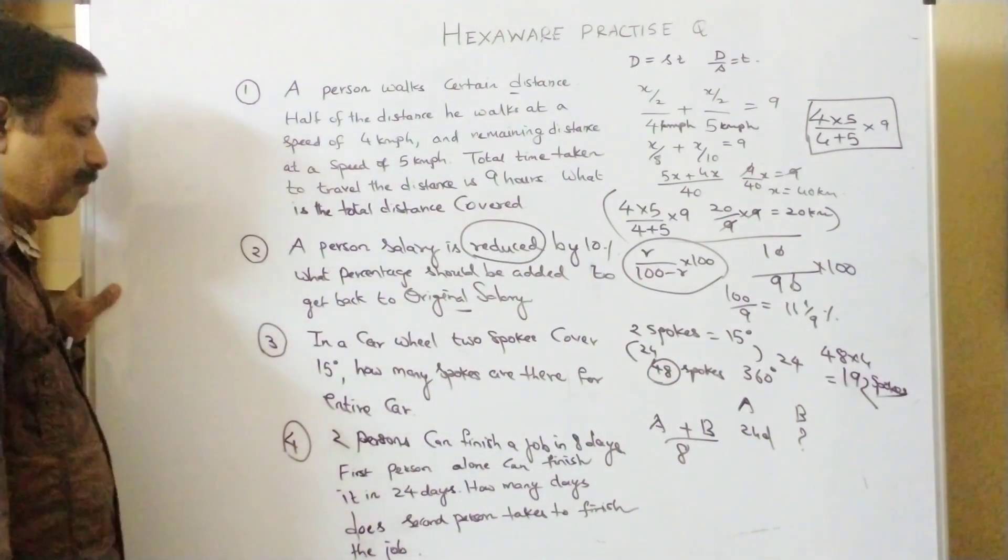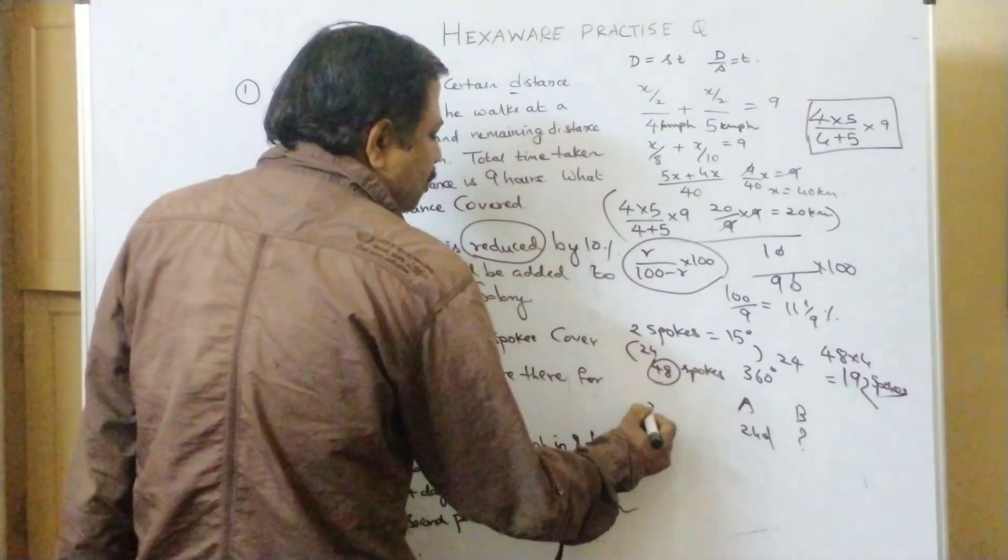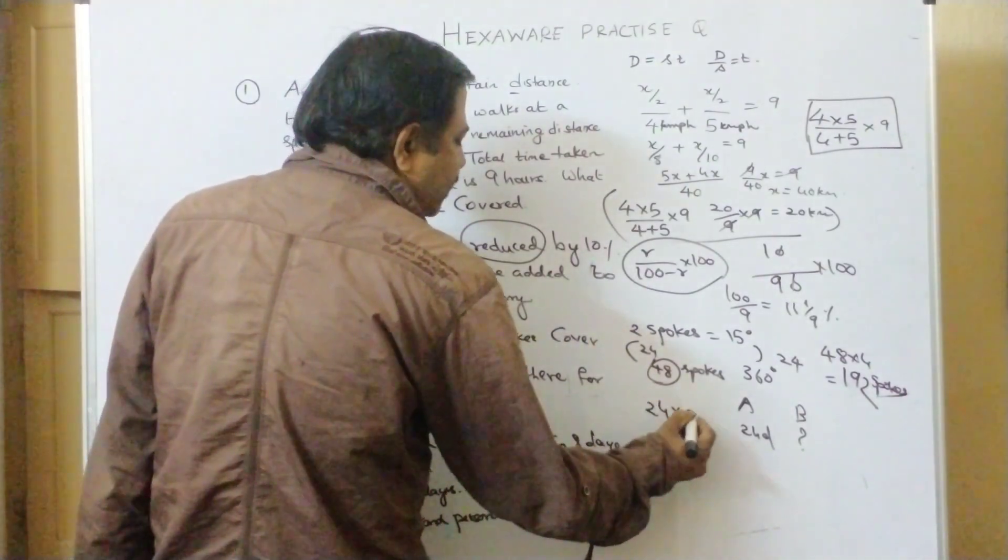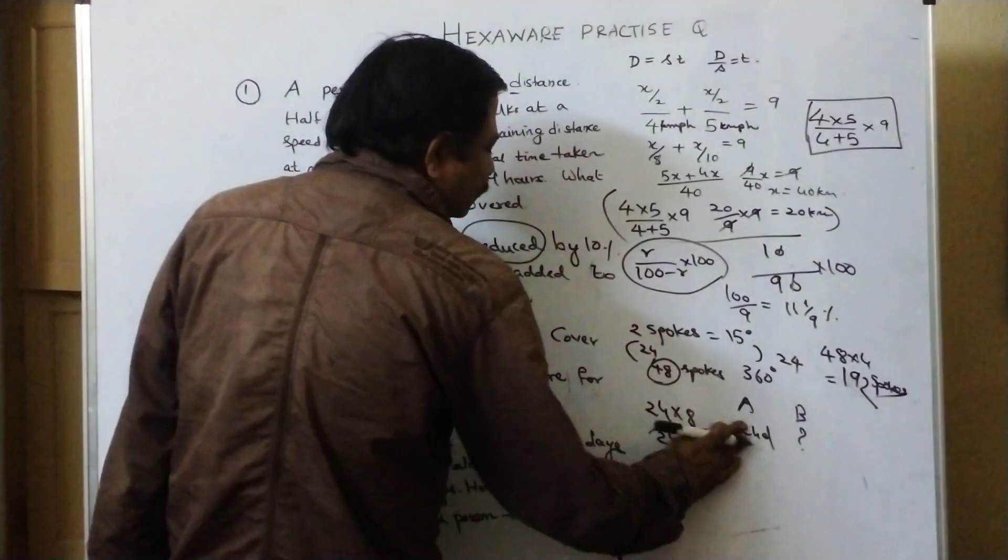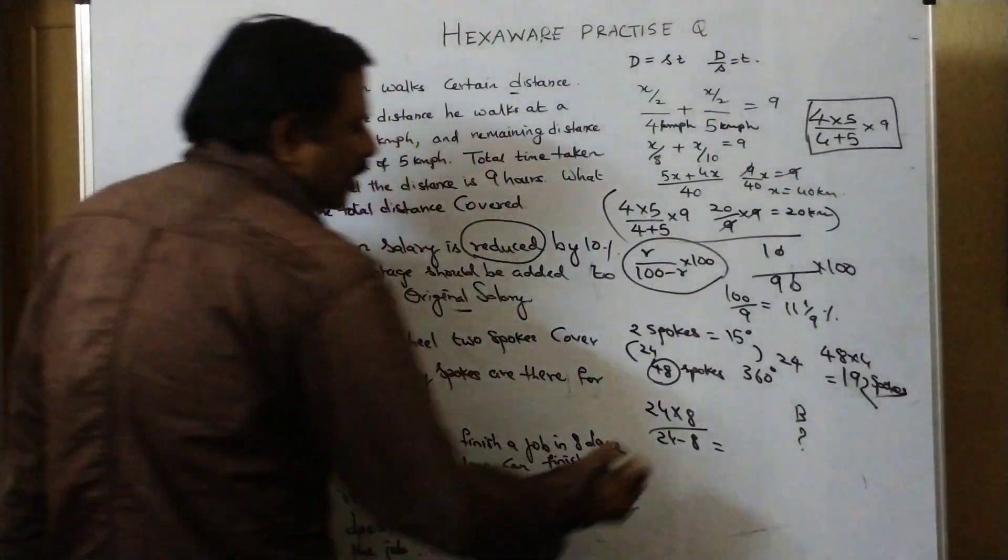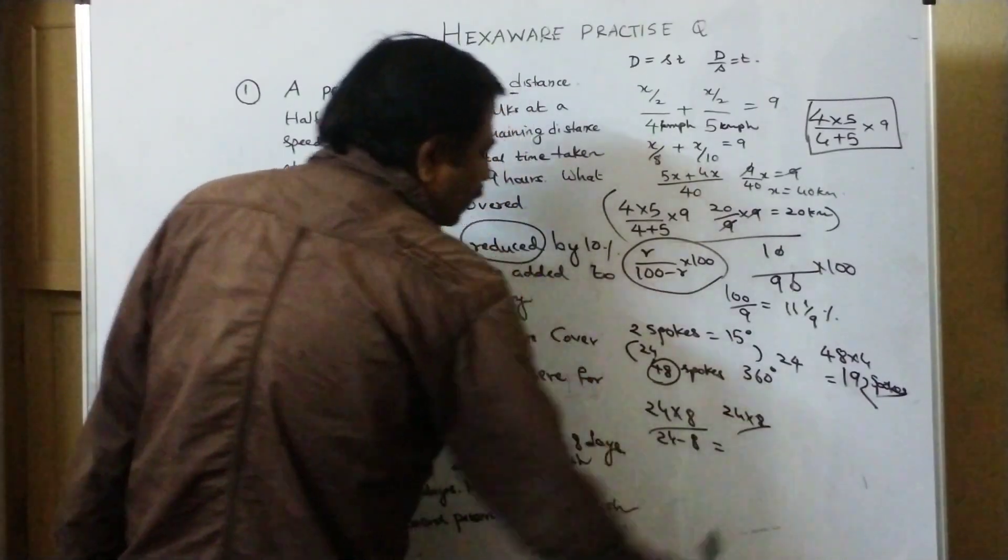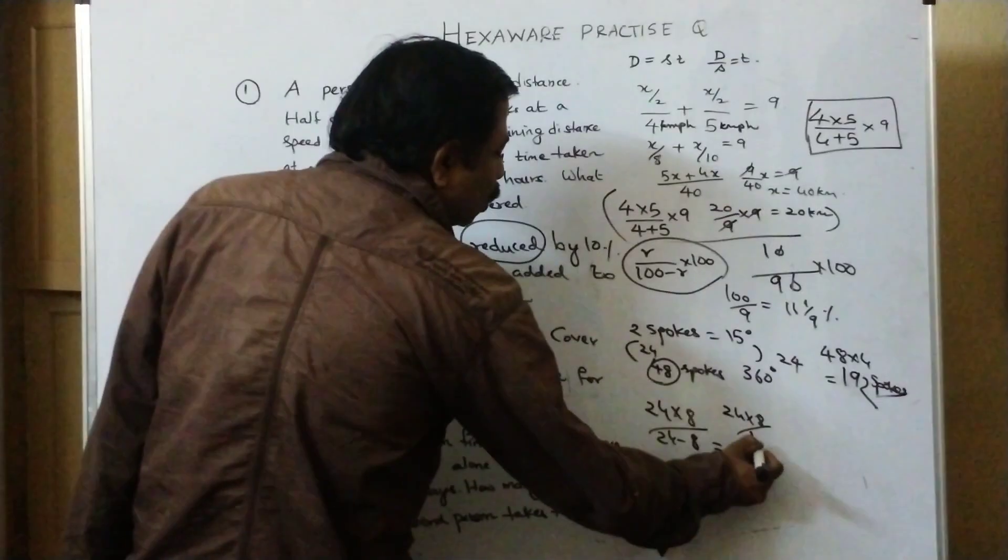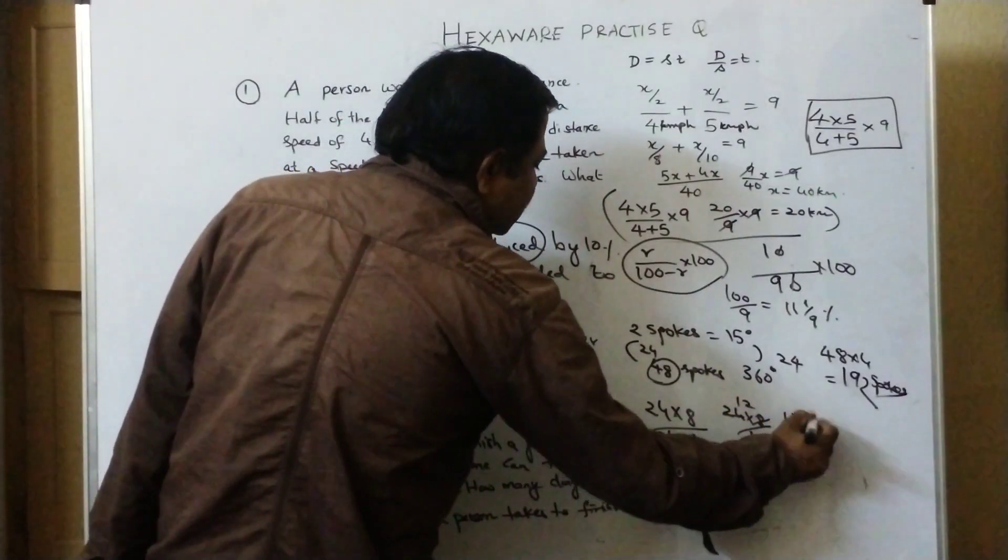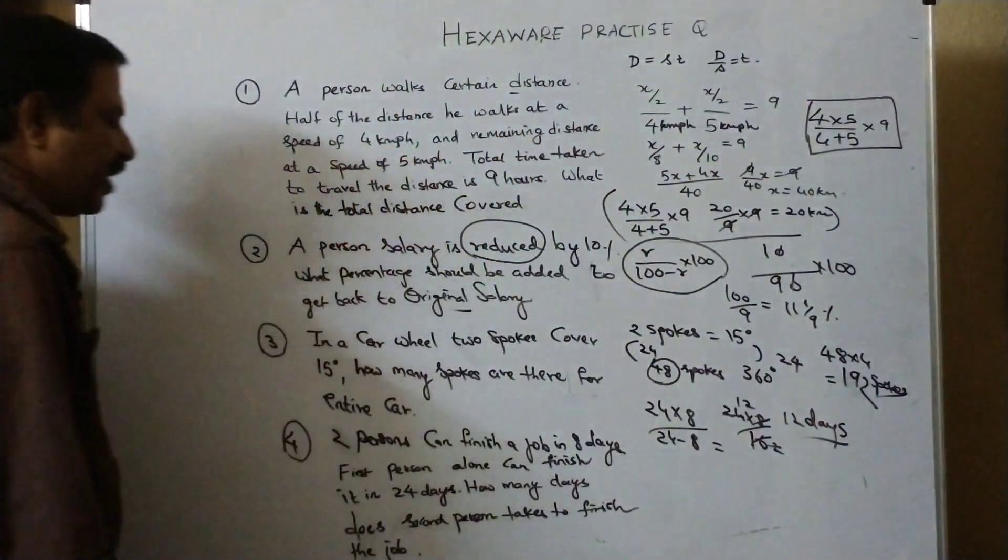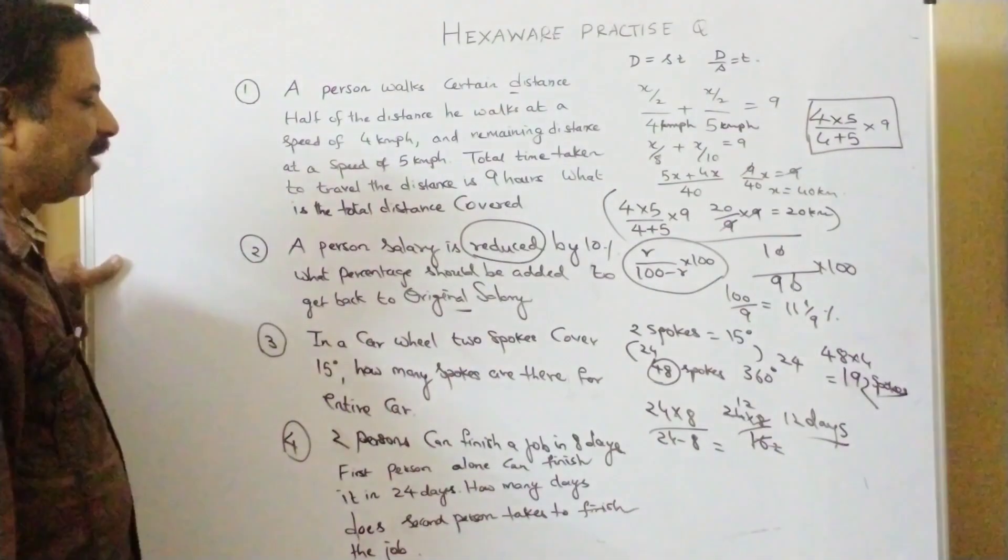Second person takes how many days to finish the job. I am going to use a trick. That is nothing but, I am doing this. 24 into 8 by 24 minus 8. So 24 into 8 divided by 24 minus 8 is 16. 2 cancels, 12 cancels. 12 days is the answer. Simple trick. Product by difference.